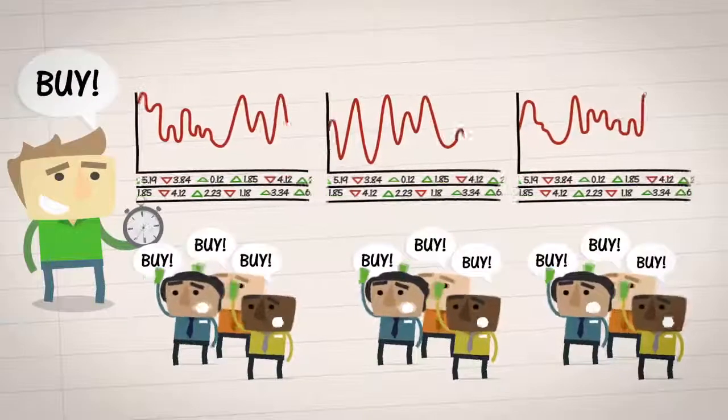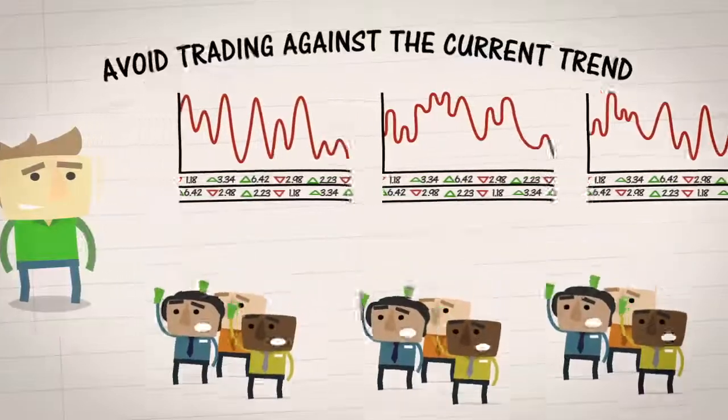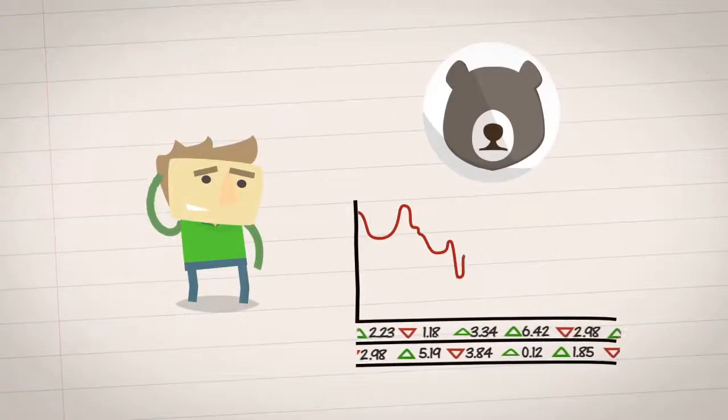What this means is that you should avoid trading against the current trend. For example, when the market is bearish and heading down, don't try to predict which stocks have hit bottom. That would be like trying to catch a falling knife.